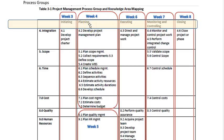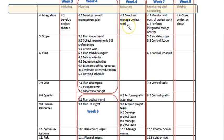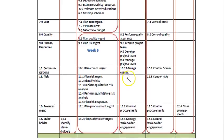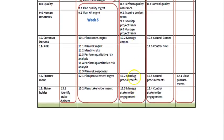After the project is planned, we get permission to execute it. This is different from real life where you start doing things and then write down what you did — here, we plan everything in enormous detail first, document it all, and then start working the plan. Executing means directing and managing the project work, performing quality assurance, acquiring and managing the project team, managing communications, conducting procurement, and working with our stakeholders.